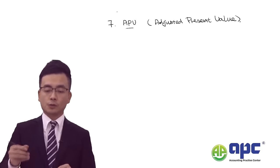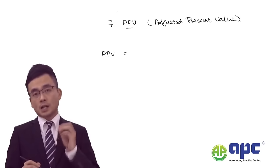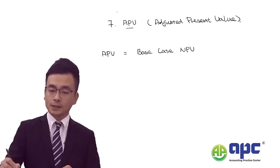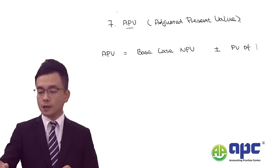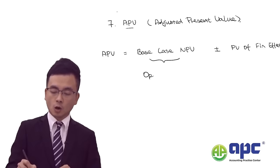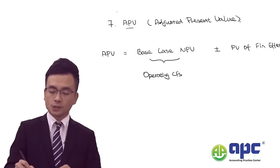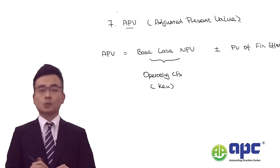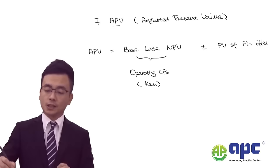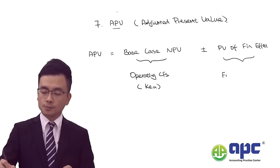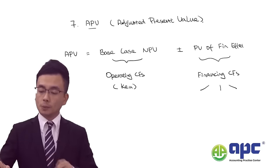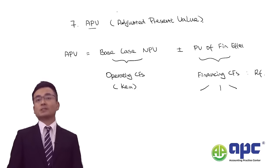For APV, we split cash flows: operating cash flows form the base case NPV, discounted using the cost of equity ungeared (without considering debt). Financing cash flows form the present value of financing effects, discounted at the risk-free rate or the yield from the business's debt.